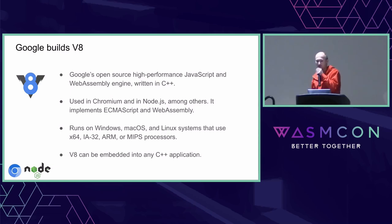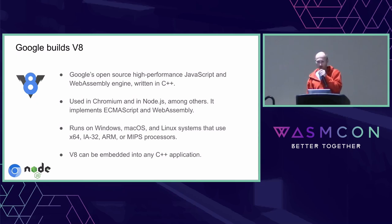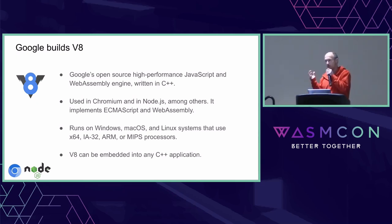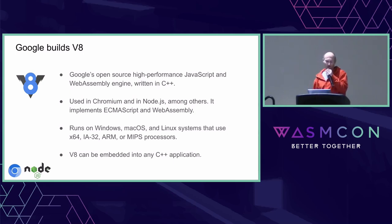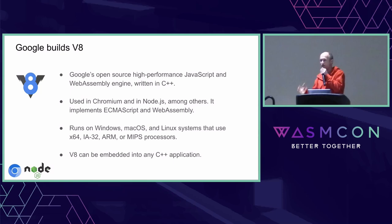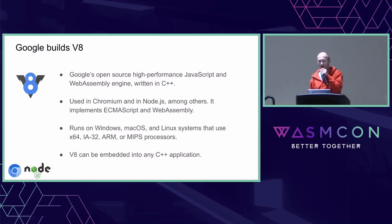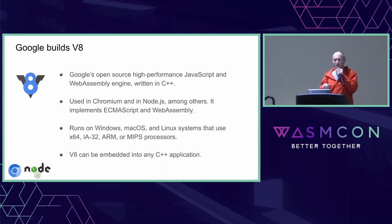Google builds V8 — Google's open source, high-performance JavaScript and WebAssembly engine written in C++. It's used in Chromium and Node.js, among many others. It implements ECMAScript and WebAssembly and needs to run on platforms like Windows, macOS, and Linux, using processor architectures such as x64, ia32, ARM, and MIPS. V8 can also be embedded in your C++ applications if needed.